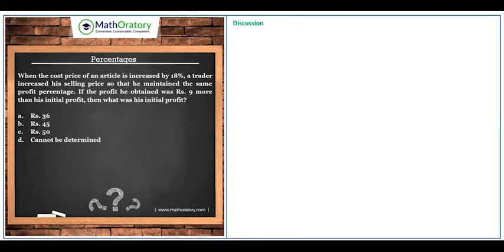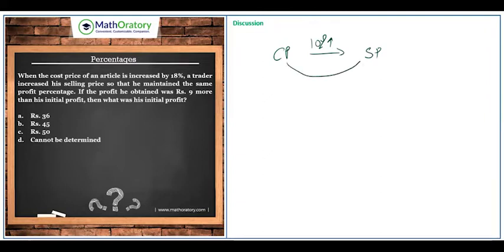If you think about CP to SP with a profit percentage of 10 percent, we can express this in terms of 'times': CP to SP becomes 1.1 times. If the CP was 100 rupees, the SP would be 110 rupees. This is a very easy example to understand.